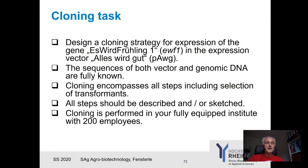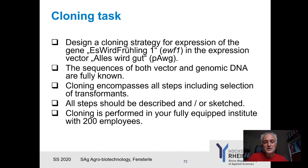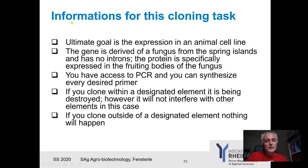Of course today there are more sophisticated cloning strategies, but for you it's only to capture the principles and estimate risks later on, for example in transgenic plants. The task is to design a cloning strategy for the expression of the gene EWF1 in the expression vector pAWG. The sequences of both vector and genomic DNA are fully known, and the cloning encompasses all steps including selection of transformants. The ultimate goal is expression in an animal cell line, and the gene is derived from a fungus.